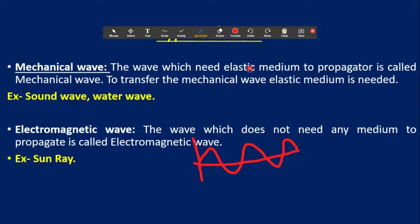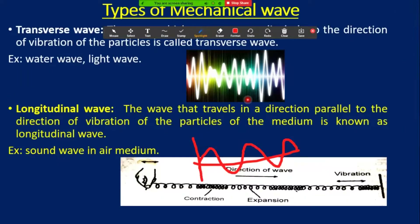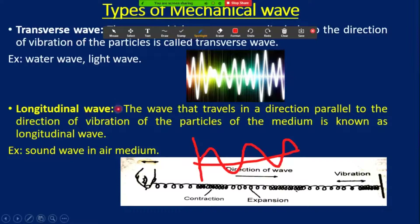Some waves emitted from our mobile are also electromagnetic waves. There are two types of mechanical waves: transverse wave and longitudinal wave.